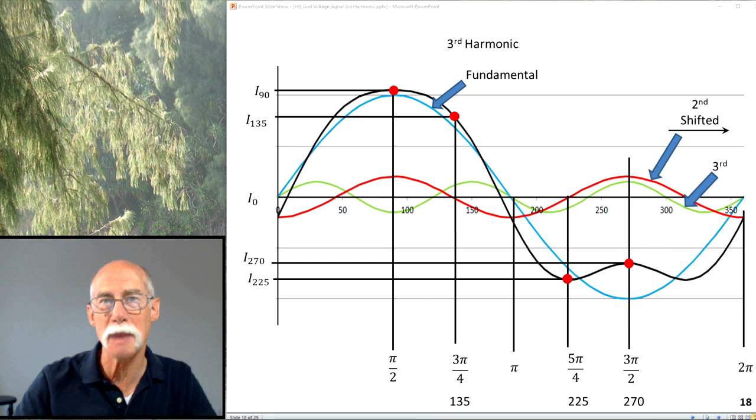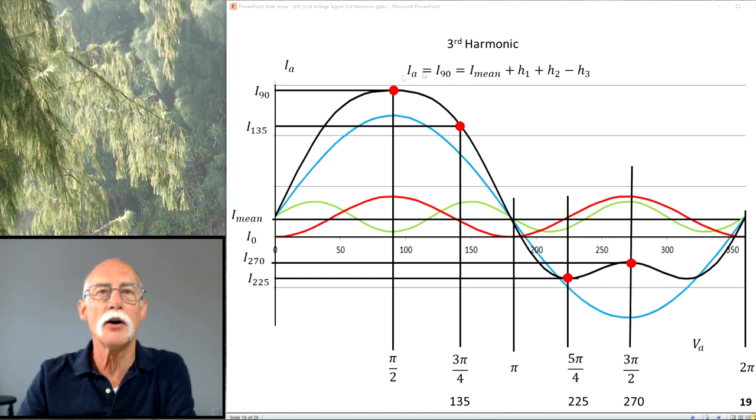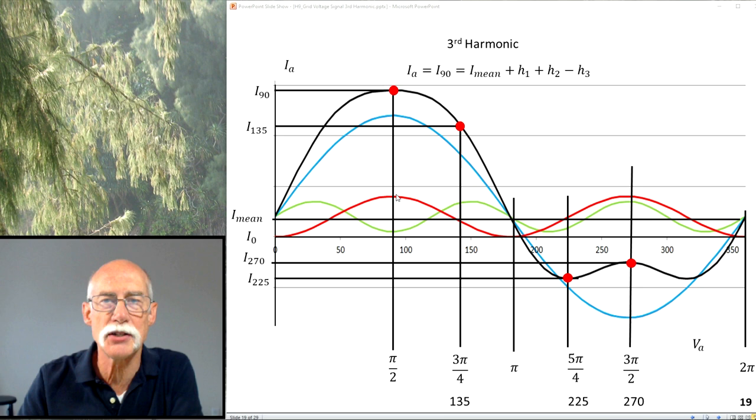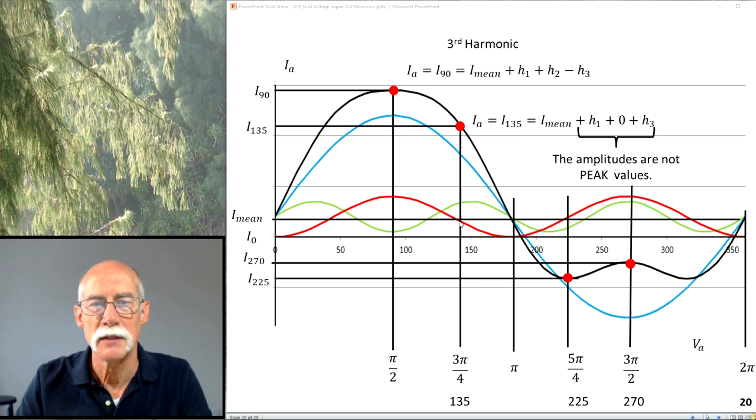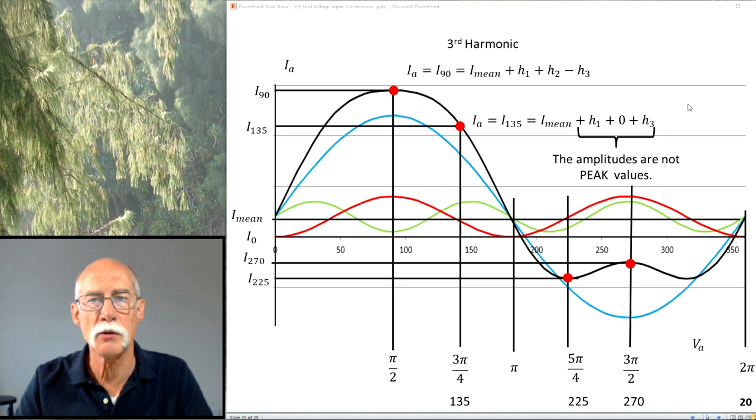So I90 is equal, again, I mean, plus H1 plus H2 minus H3, because H3 is going negative. I135, I mean, is positive. H1 is positive. H2 is zero. The second order is zero. And then third is going to be positive. But these aren't peak values. So we've got a problem.